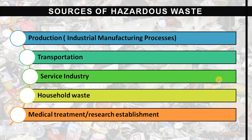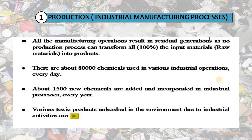Starting with production, also known as the industrial manufacturing process. During manufacturing operations, not 100% of raw material is transformed, so there is always a residual generated. There are about 80,000 chemicals used in various industrial operations every day, and these various chemicals used in manufacturing daily products contribute some percentage to hazardous waste.